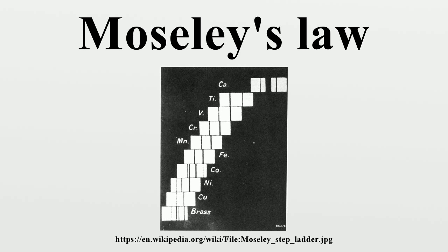Following conversations in 1913 with Niels Bohr, a fellow worker in Ernest Rutherford's Cavendish laboratory, Moseley had become interested in the Bohr model of the atom, in which the spectra of light emitted by atoms is proportional to the square of Z, the charge on their nucleus. Bohr's formula had worked well to give the previously known Rydberg formula for the hydrogen atom, but it was not known then if it would also give spectra for other elements with higher Z numbers.